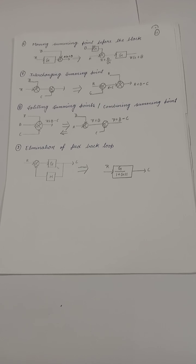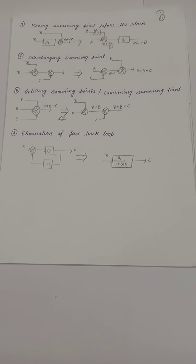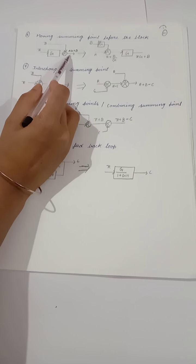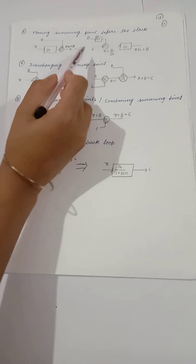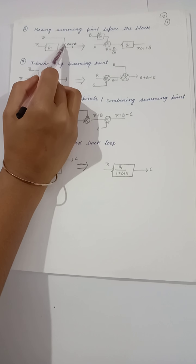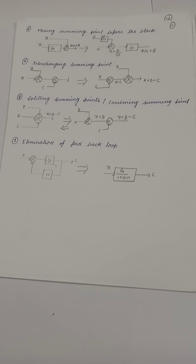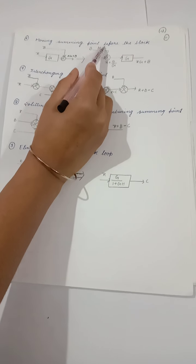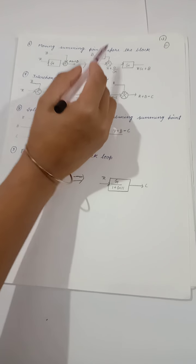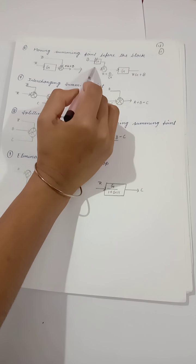For the sixth rule, moving the summing point before the block, we need to get the output RG plus B. If we move the summing point before the block, B is also entering the block. To reduce the effect of that, we multiply by 1/G in the path. This is the modified block.